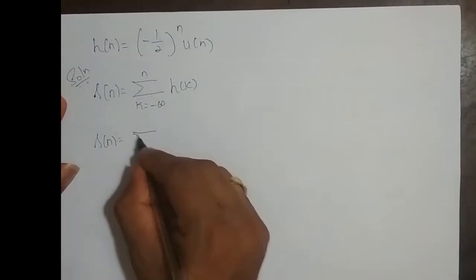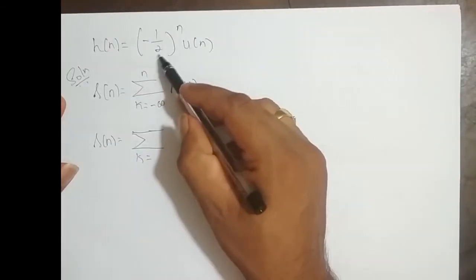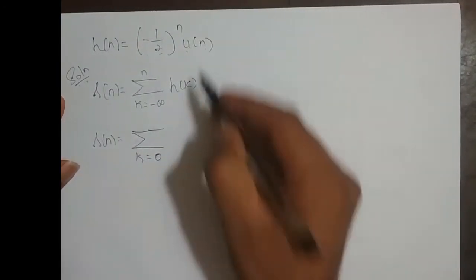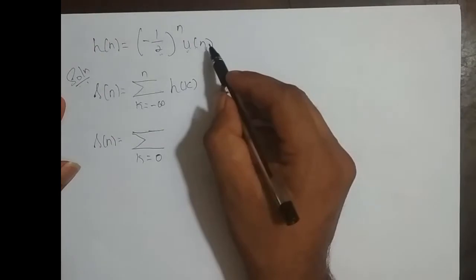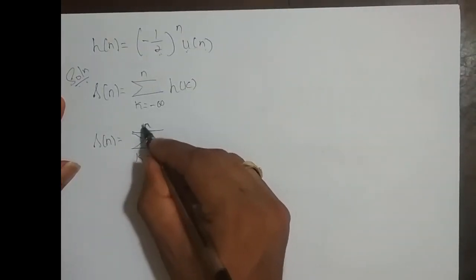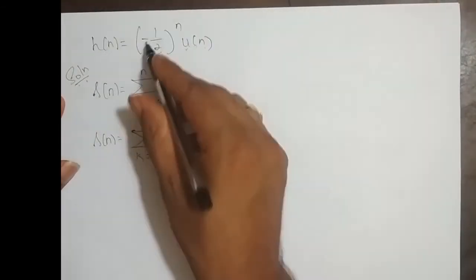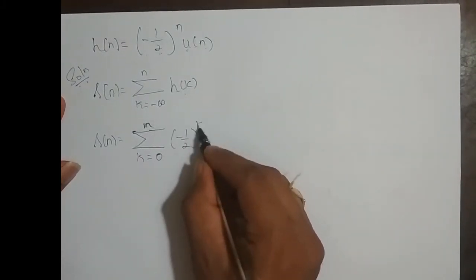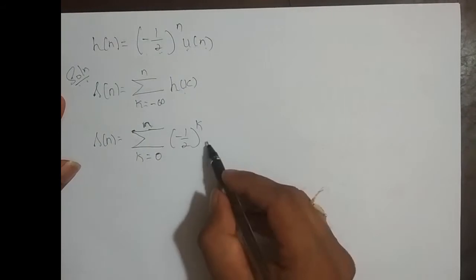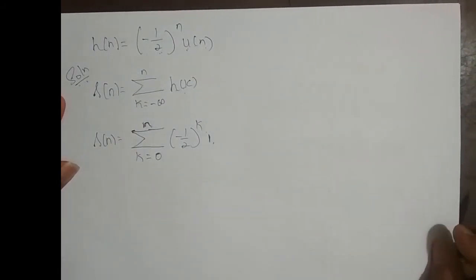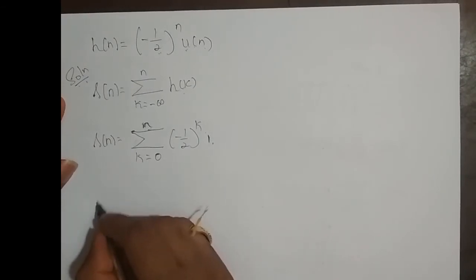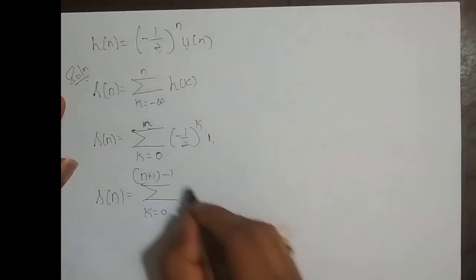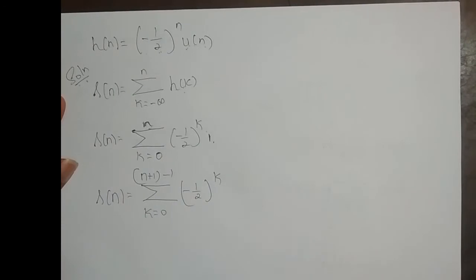S of n is equal to summation k. Our signal starts from 0, since we have u of n, so it starts from 0 and u of n ends at infinity but in the formula it is n. H of k — this is h of n — if this is h of n then h of k is minus 1 by 2 power k, and u of k is 1 for k varying from 0 to n. So I will write this as summation k varying from 0 to n plus 1 minus 1 — minus 1 by 2 power k.